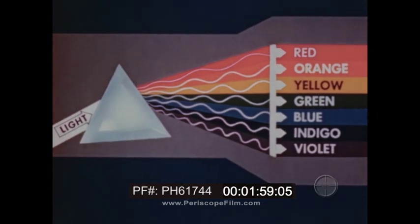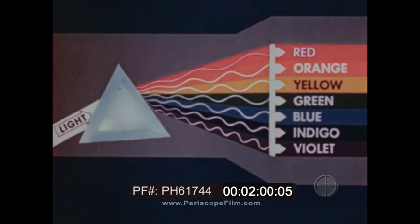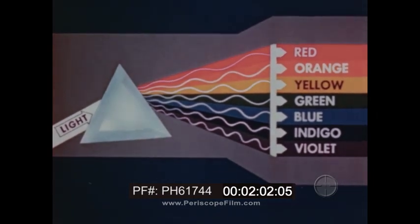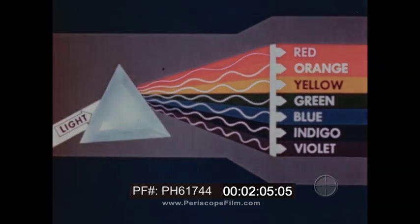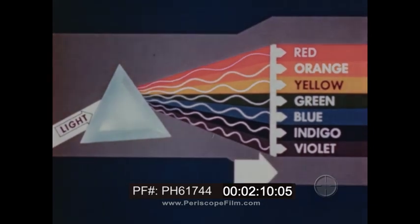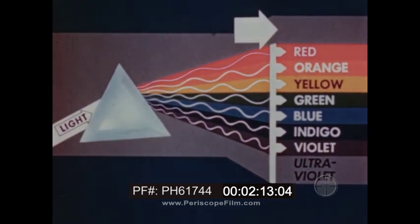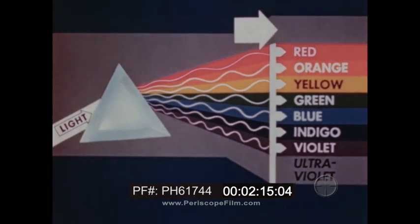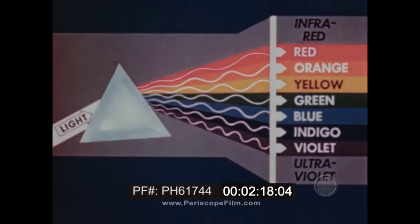These seven colors and the subtle shades in between make up the total range of light waves visible to the human eye. However, sunlight contains many shorter invisible waves known as ultraviolet, and at the other end of the spectrum are the longer infrared waves, also invisible.